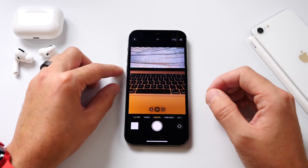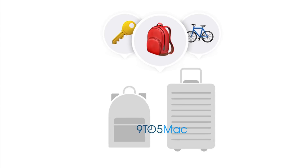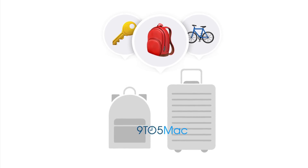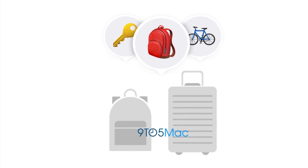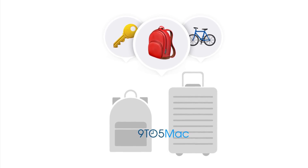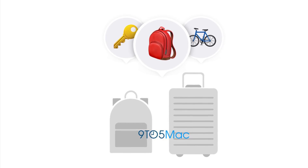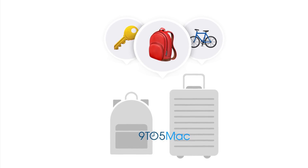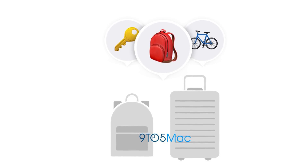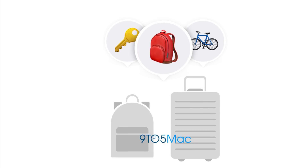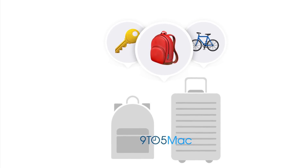9to5Mac has provided additional information on 14.3 Beta 1. There are a few glyphs that show a key, a backpack, some luggage, and a bicycle — and this is all pertaining to AirTags. We know that AirTags are soon to be released by Apple. On 14.3, we see some of the first glyphs hidden within the software, which hints that AirTags will most likely be coming as the release of 14.3 rolls out as well.